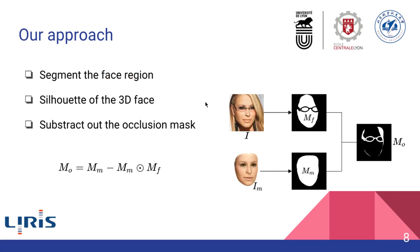The most difficult part is obtaining the occlusion mask. Since occlusion types are exhaustless, we cannot train a segmentation module that precisely segments out every occlusion. Instead of detecting the occlusion directly, we decide to segment the face part, since we have tens of thousands of face images for training. We then use the 3D reconstructed silhouette and the face region to subtract out the occluded part.